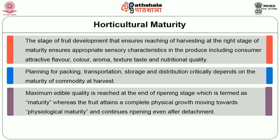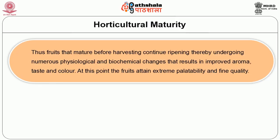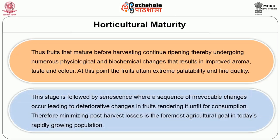The fruit attains complete physical growth moving towards physiological maturity and continues ripening even after detachment. When the plant part is ready for consumption by the consumer, it is termed as horticultural maturity. Fruits that mature before harvesting continue ripening, undergoing numerous physiological and biochemical changes that result in improved aroma, taste and color. At this point the fruits attain extreme palatability and fine quality, followed by senescence where irrevocable changes occur leading to deteriorative changes, rendering the fruit unfit for consumption. Therefore, minimizing post-harvest losses is the foremost agricultural goal in today's rapidly growing population.